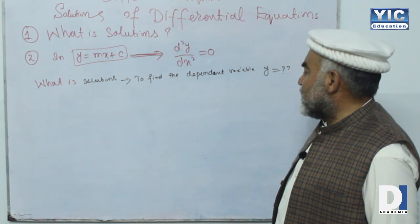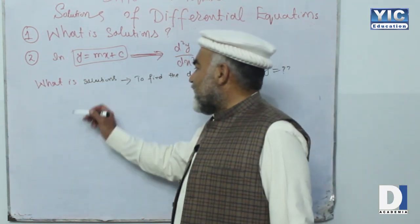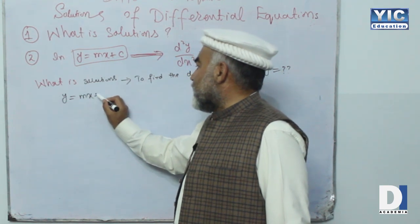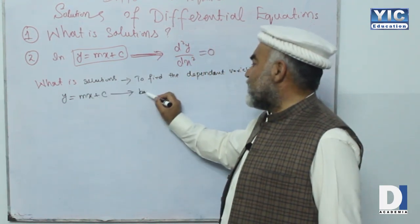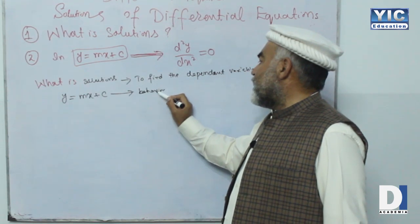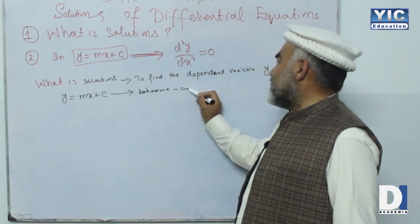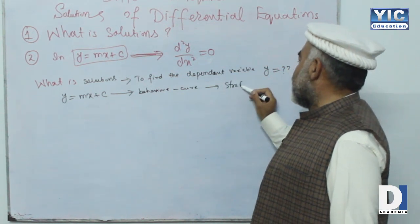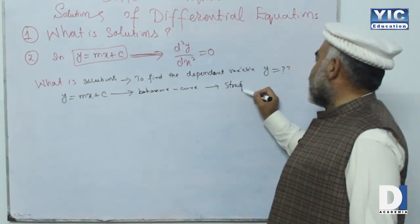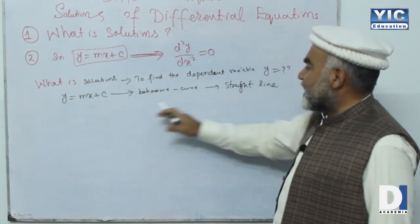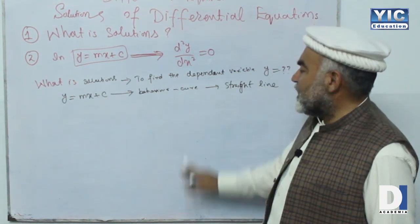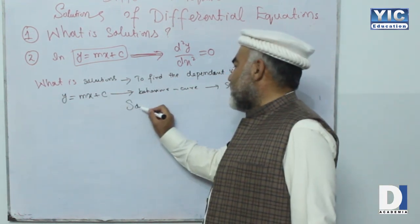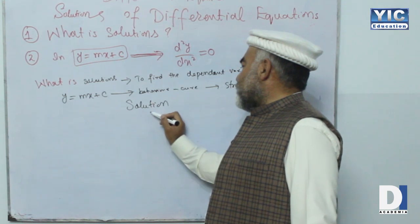The dependent variable may represent some behavior, and here this behavior is a curve that is a straight line. So this curve is a straight line, and the solution corresponds to this straight line.